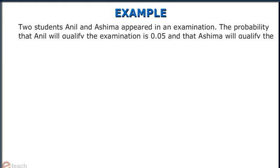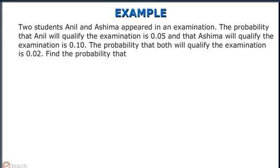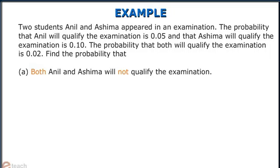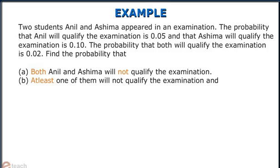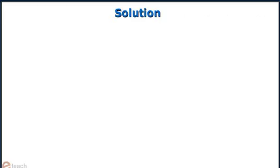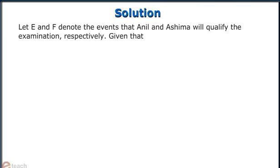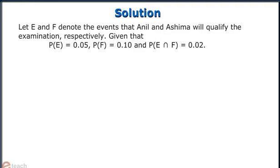Two students Anil and Ashima appeared in an examination. The probability that Anil will qualify the examination is 0.05 and that Ashima will qualify is 0.10. The probability that both will qualify is 0.02. Find: A) both Anil and Ashima will not qualify, B) at least one of them will not qualify, and C) only one of them will qualify. Let E and F denote the events that Anil and Ashima will qualify the examination respectively.